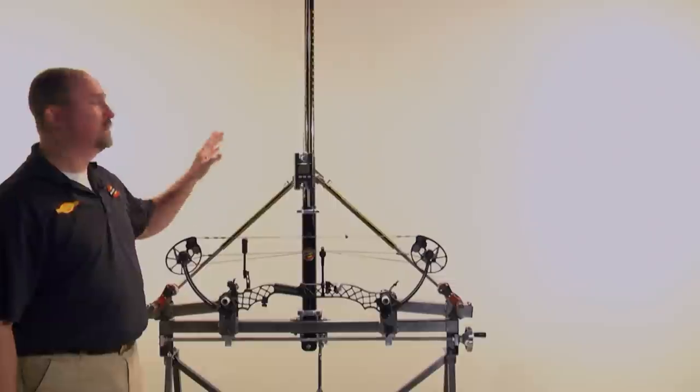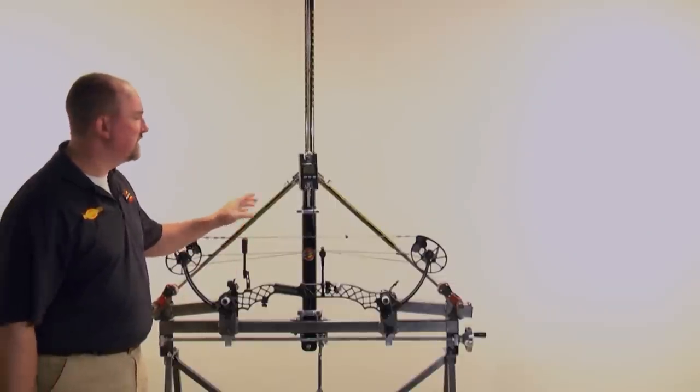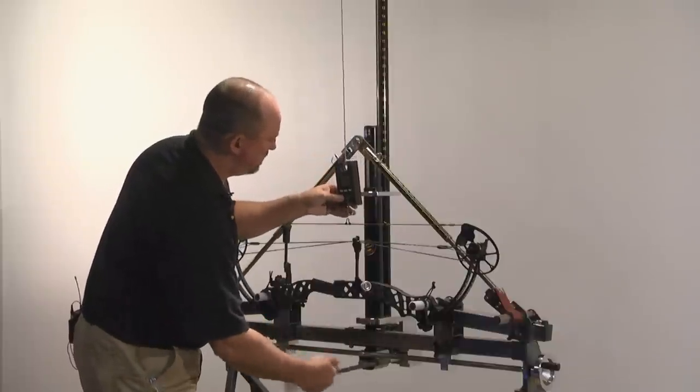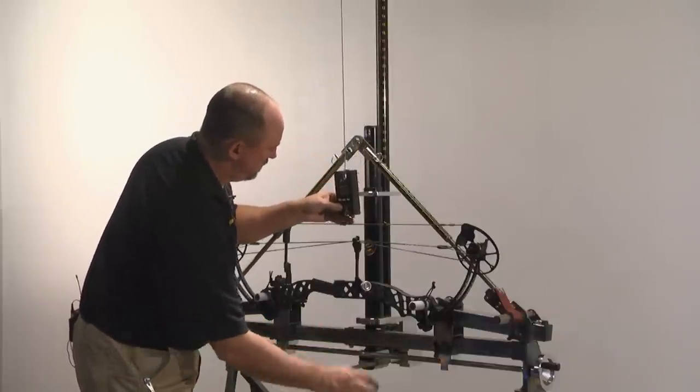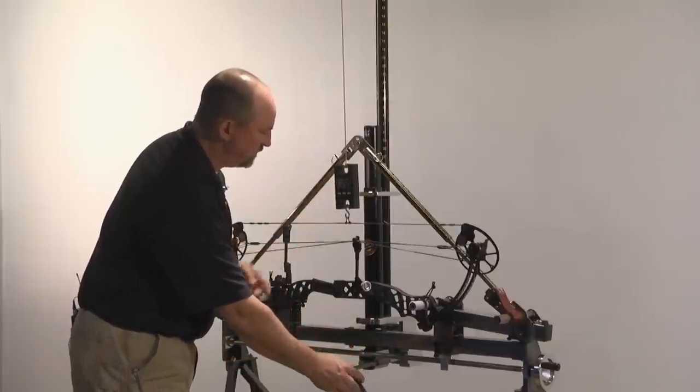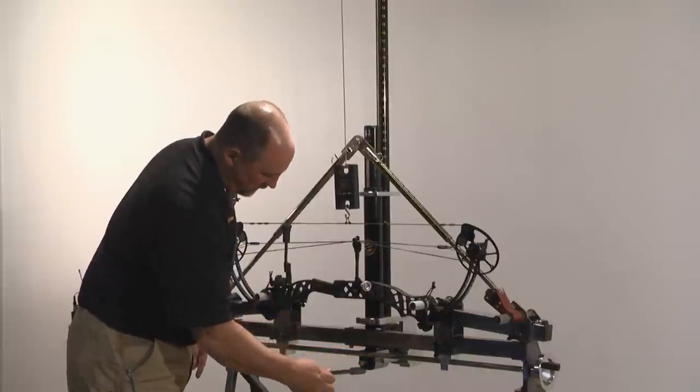One really neat feature of the pro draw is that it will allow us to match two bows draw lengths precisely. To do that, first thing we're going to do is drop this down and hook this in the D loop. And we're going to want to remove the slack from the string but not actually put tension on the string. So set that at zero.